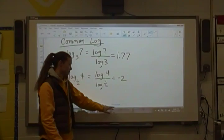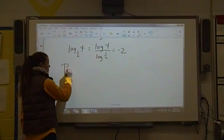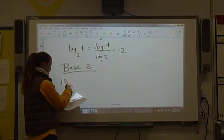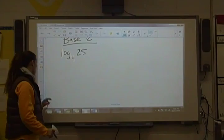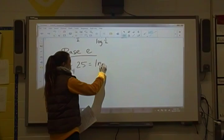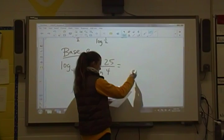Let's try a couple with base e. So we look at log base 4 of 25. So we're going to do this with base e, so natural log of 25 divided by natural log of 4. Works both ways. We're going to get 2.32. Type that into your calculator.